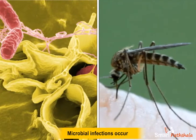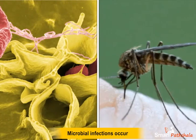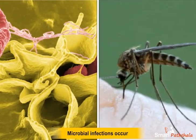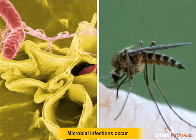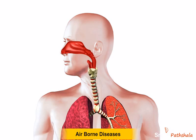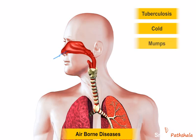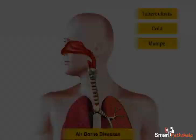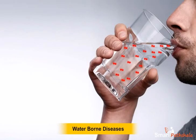Microbial infections occur in different ways. They may occur through air, water, insect bite, etc. The microbial diseases which spread through inhalation of contaminated air are called airborne diseases, and tuberculosis, cold, and mumps are examples of some airborne diseases. The microbial diseases which spread through intake of contaminated water are called waterborne diseases.